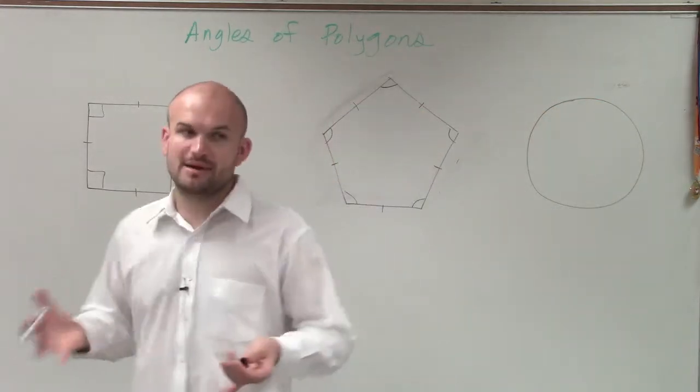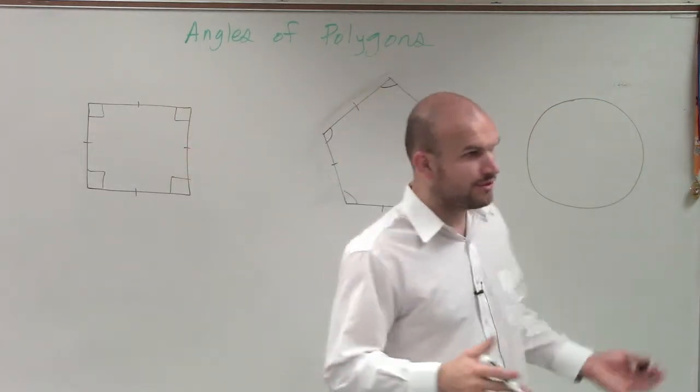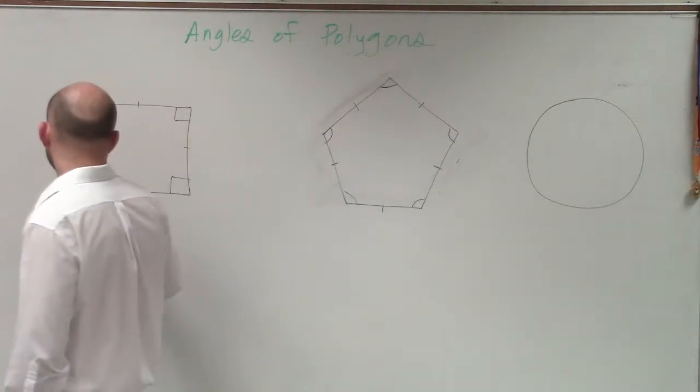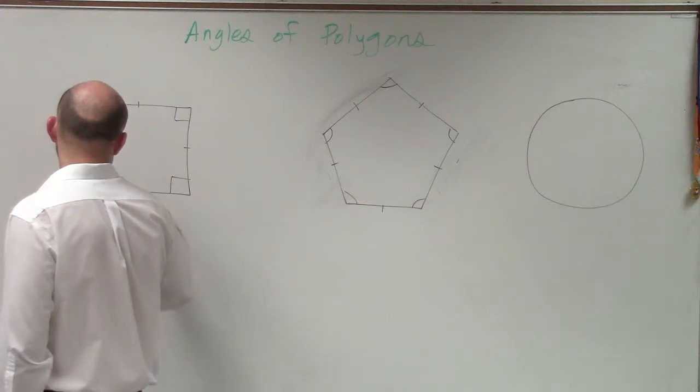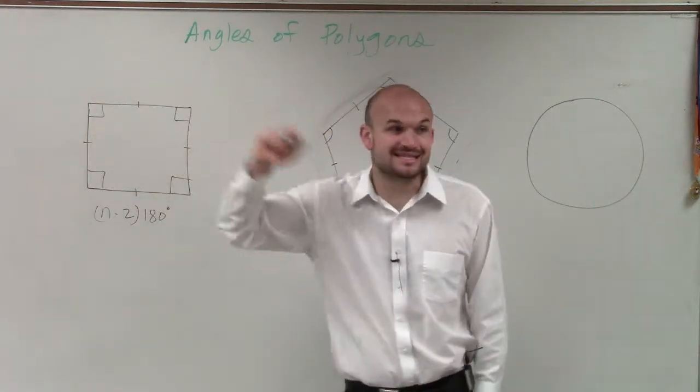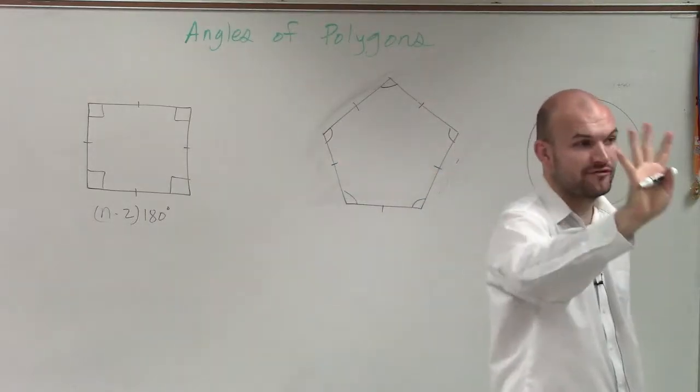So ladies and gentlemen, let's first go back to our interior sum theorem. Remember, to find the sum of a quadrilateral, I have to do n minus 2 times 180 degrees, where n represents the number of sides.